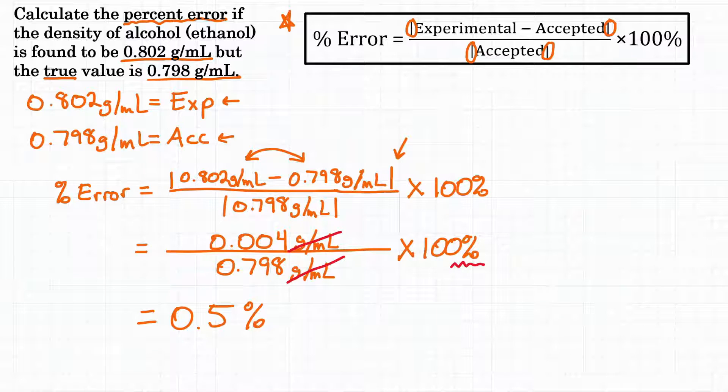All right there you have it. Calculate the percent error if the density of ethanol is found to be 0.802 grams per milliliter but it's actually 0.798 grams per milliliter. The percent error is 0.5%.